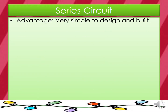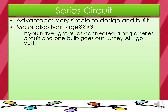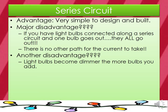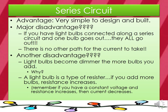The advantage of a series circuit is that it's very simple to design and build. The major disadvantage is that if one bulb goes out, they all go out — there's no other path for the current to take. Another disadvantage is that light bulbs become dimmer the more bulbs you add, because each bulb gets less energy. A light bulb is a type of resistor, so adding more bulbs increases resistance.